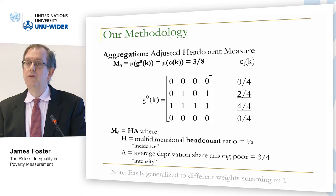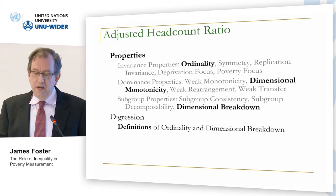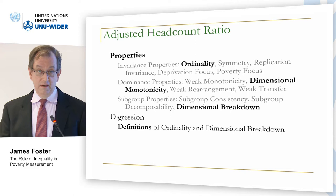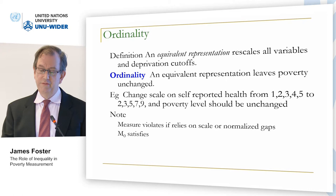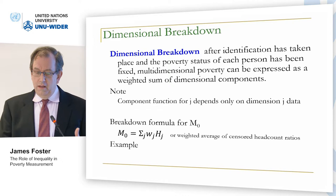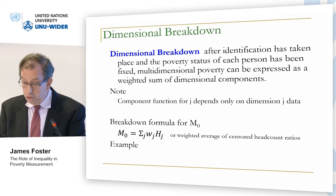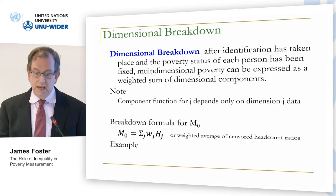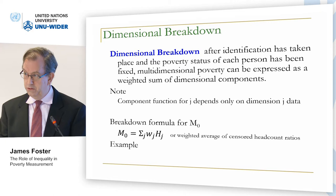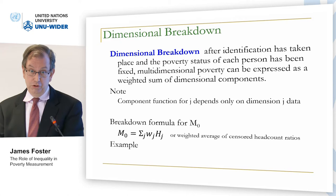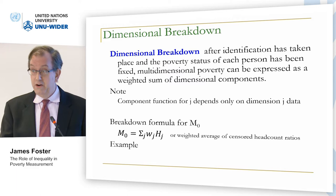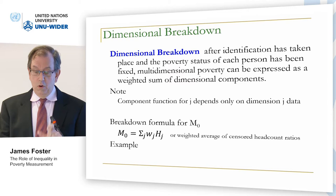This satisfies a number of properties. In the paper we formally define ordinality and dimensional breakdown. Dimensional breakdown means: after identification of who is poor is done and the poverty status of each person is fixed, multidimensional poverty can be expressed as a weighted sum of dimensional components that depend only on that dimension's information. The breakdown formula for the adjusted headcount ratio is very simple: weights times the censored headcount ratio, summed across dimensions, gives you M0.